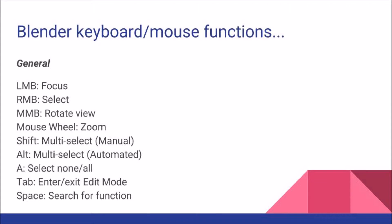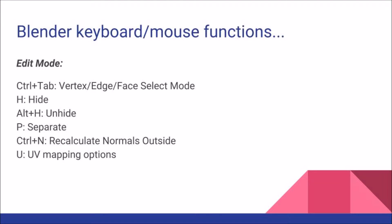Some shortcuts are specific to modes. In Blender we have different modes. The main ones we'll be using are Object Mode — selecting whole meshes at a time — and Edit Mode, which is for picking apart individual pieces of a mesh: picking a vertex, a face, or even an edge, which is the side of any particular face.